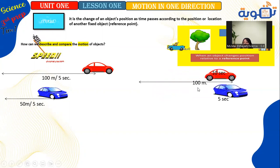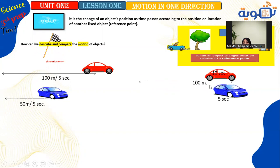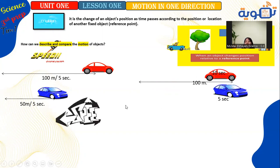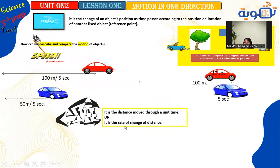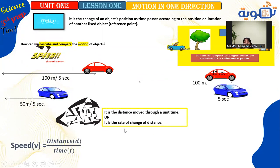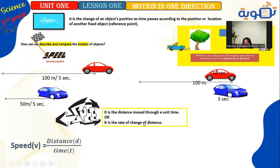The blue car covered 100 meters in 5 seconds, while the red car took 10 seconds to cover the same distance — meaning the blue one covered the same distance in less time. Speed is the distance moved per unit time, or the rate of change of distance. The two factors necessary to describe motion are distance and time. Therefore: V equals distance over time.